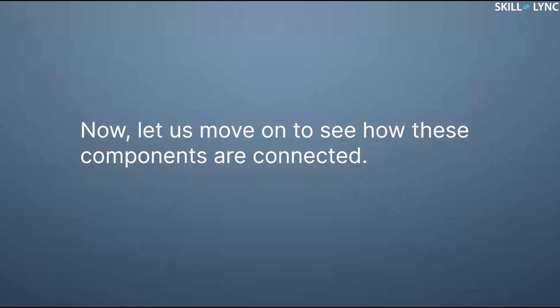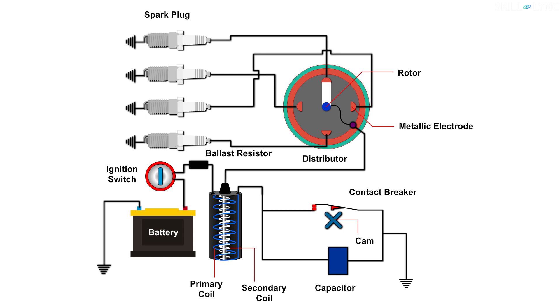Now let's move on to see how these components are connected. The negative terminal of the battery is grounded and the positive terminal is connected to the primary winding. Ignition switch and the ballast resistor are connected in series between the battery and the primary coil.